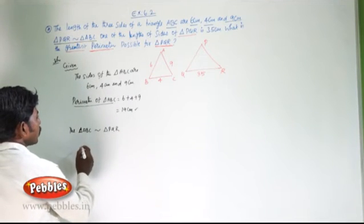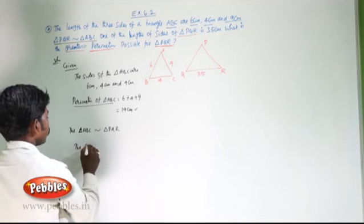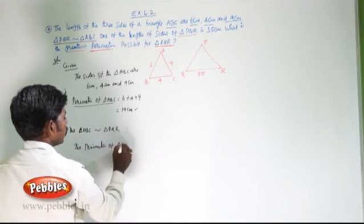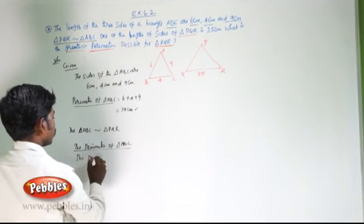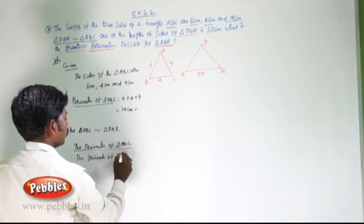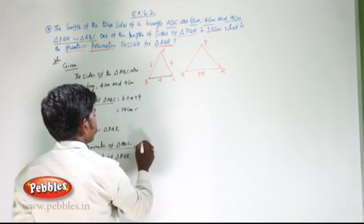Then the corresponding sides are proportional, and the perimeter of triangle ABC to triangle PQR follows the same proportion as the sides are proportional.